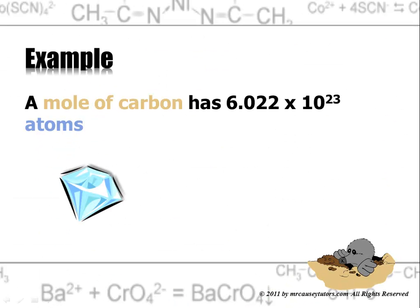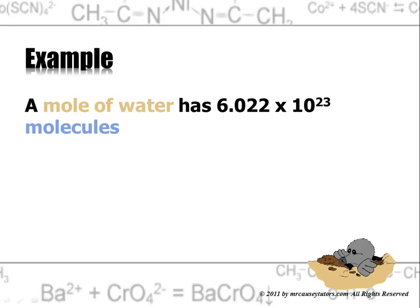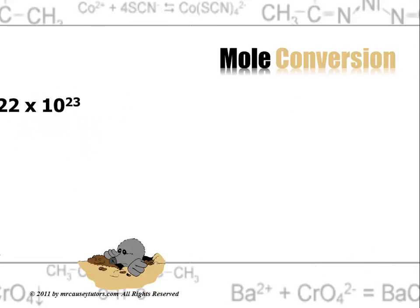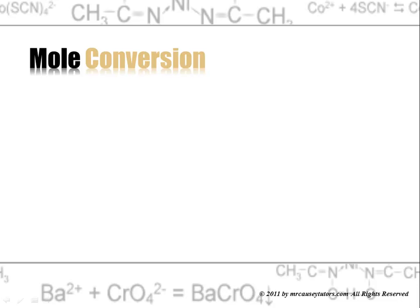A mole of carbon has 6.022 times 10 to the 23 atoms. A mole of water has 6.022 times 10 to the 23 molecules. And a mole of salt has 6.022 times 10 to the 23 formula units. And on top of that, remember that a mole of pizzas would be 6.022 times 10 to the 23 pizzas.